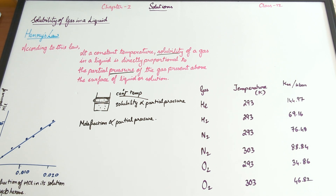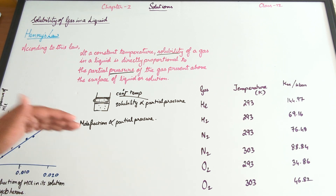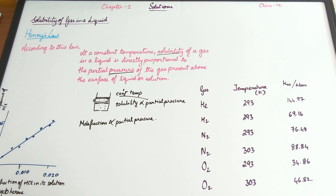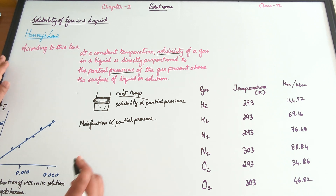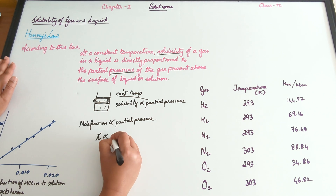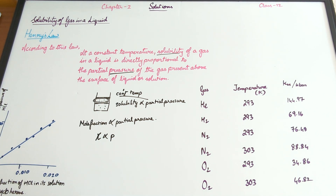Dalton said that the solubility is a function of the partial pressure of the gas. Considering mole fraction as a measure of the solubility of the gas, we get that the mole fraction of the gas in the liquid is directly proportional to the partial pressure of the gas above the liquid, again at constant temperature. So mole fraction X is directly proportional to partial pressure P.